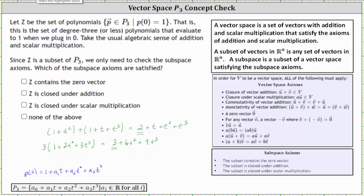None of the subspace axioms are true for the subset Z. I hope you found this helpful.